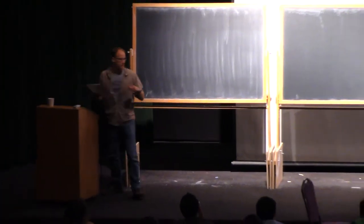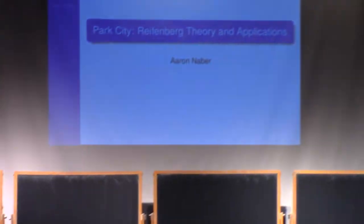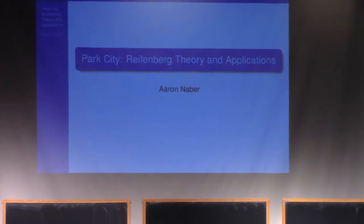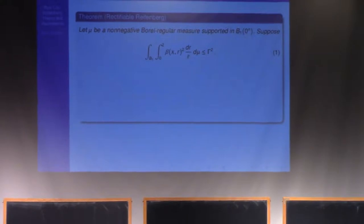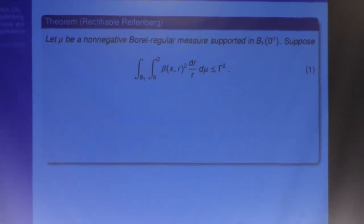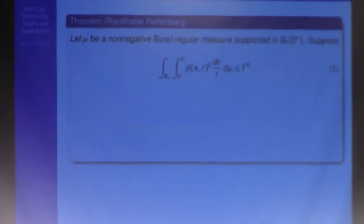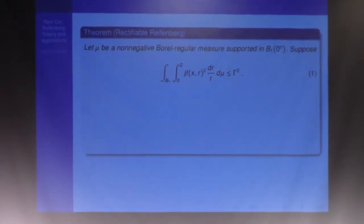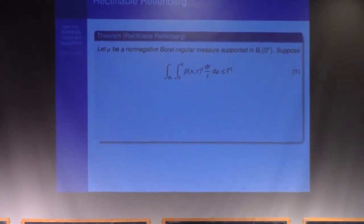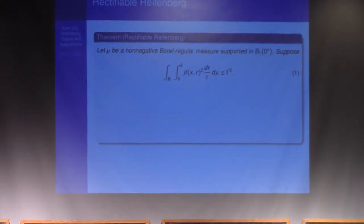Let's just start with a bit of a reminder of what we're talking about. So what we want to prove here is the rectifiable Reifenberg theorem. The statement was the following: We have some non-negative measure supported on the ball of radius one. Recall, we had these nice Jones-beta numbers that measure in some integral sense how far away the support to the measure is from being an affine plane on any given ball.